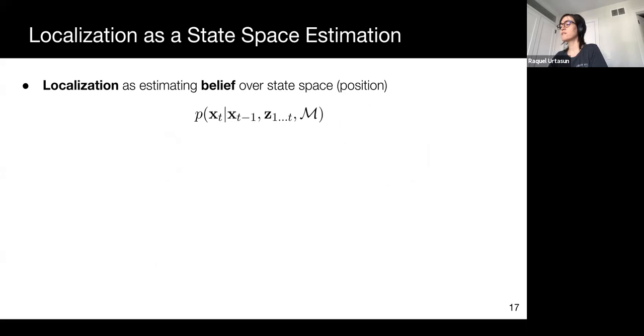In this context, we can look at localization as a probabilistic inference problem, that is, estimating the belief over our state space, which in this case happens to be a position.